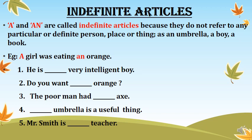Exercise: 'He is dash very intelligent boy.' The word 'very' does not start with a vowel sound, so we use 'a': 'He is a very intelligent boy.' Next: 'Do you want dash orange?' Orange starts with the letter O, which is a vowel, so we use 'an': 'Do you want an orange?'